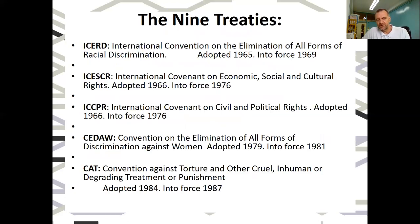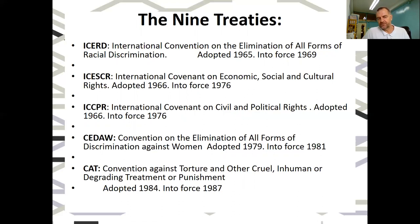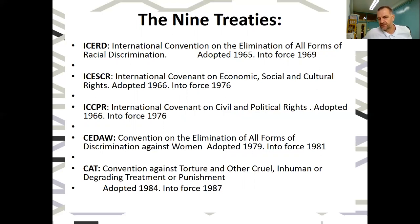Looking at human rights treaties, we have nine, known by their acronyms: ICERD, ICESCR, ICCPR, and so on. The first human rights treaty, ICERD, was adopted by the General Assembly in 1965 — meaning the United Nations agreed this document should become a treaty — and came into force in 1969, meaning enough countries had agreed to it.